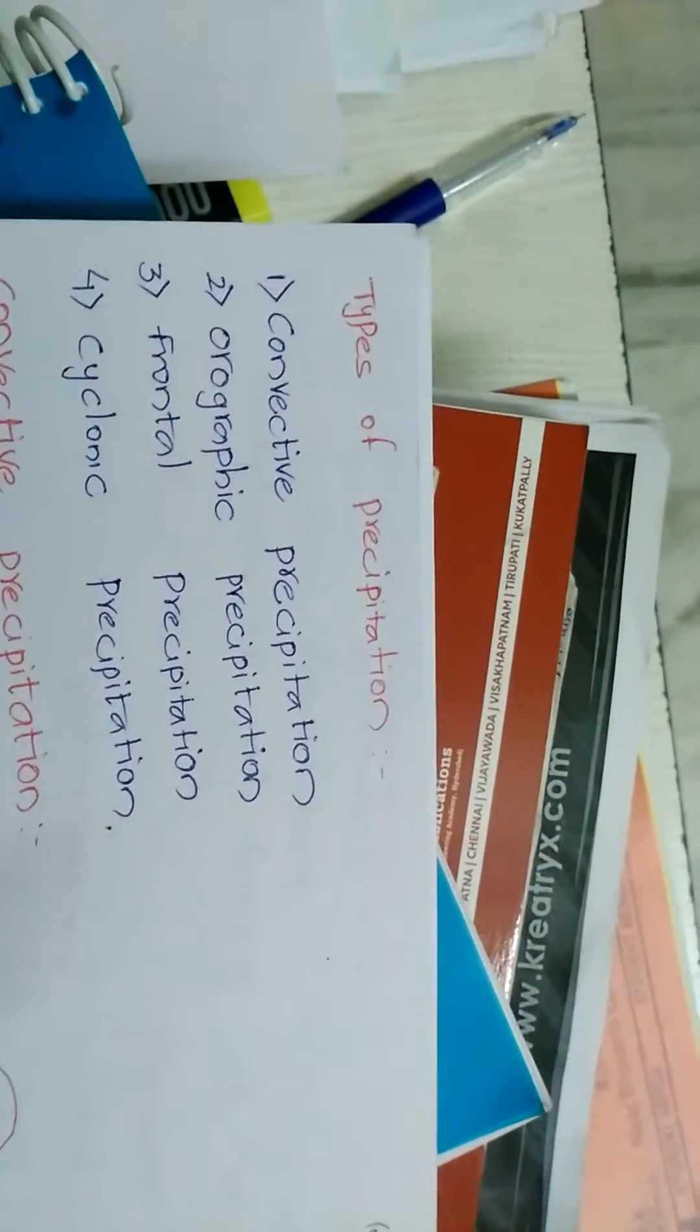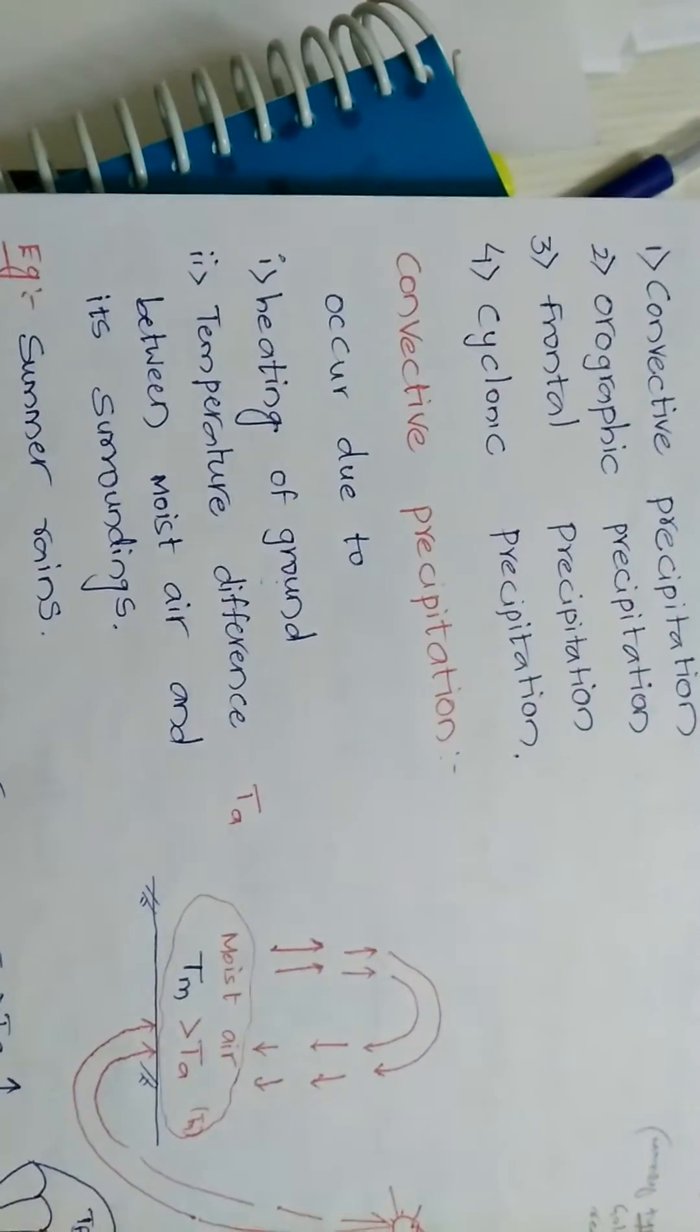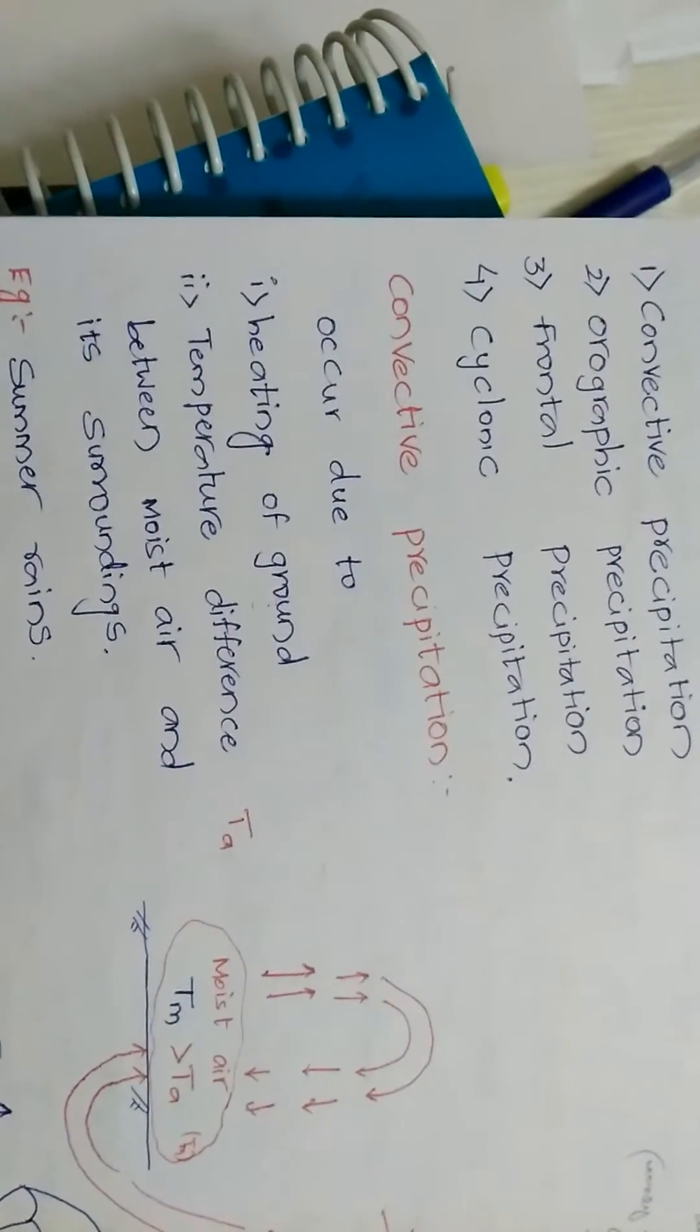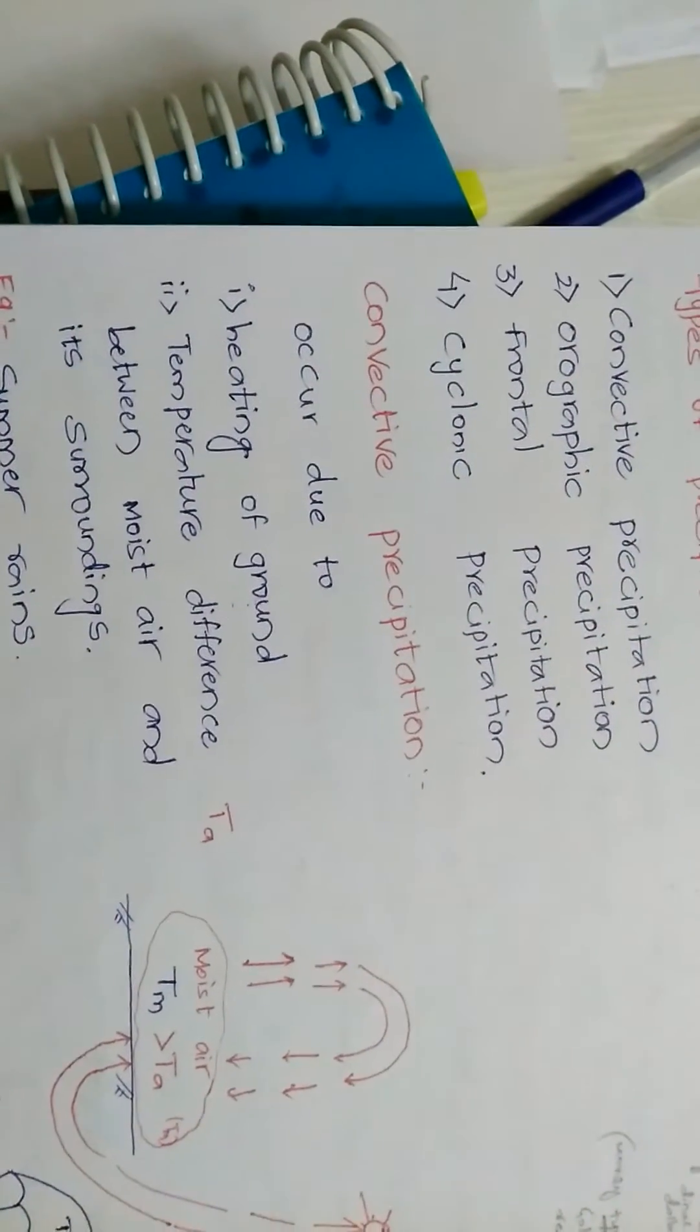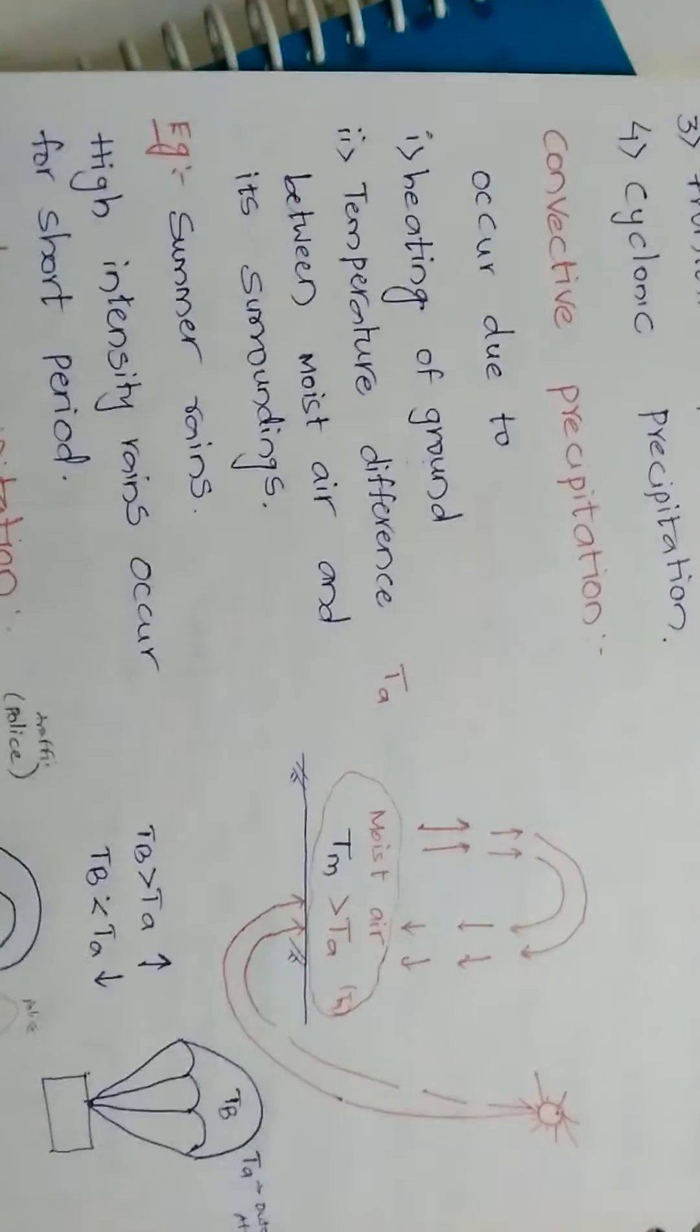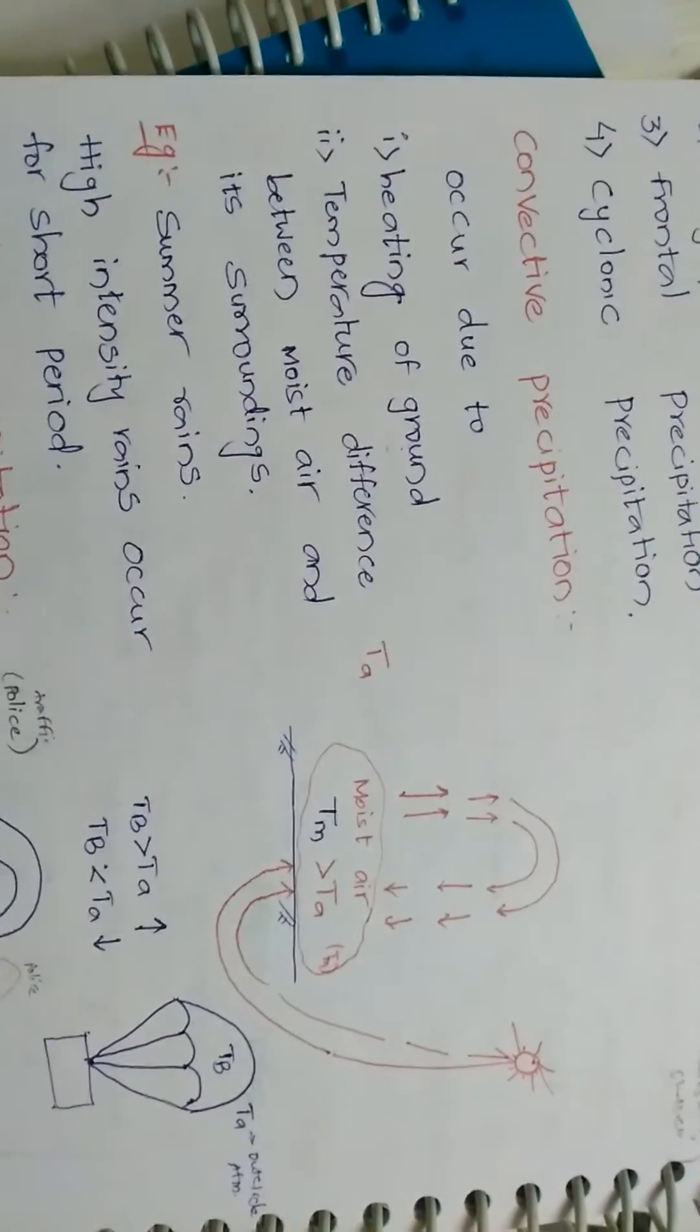Convective precipitation occurs due to the heating of ground. Temperature difference between moist air and its surroundings. Example of convective precipitation is summer rains. High intensity rain occurs for short period.